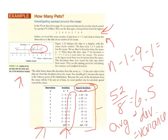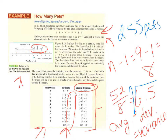The problem with the variance is that because we squared the deviations, our units are now squared pets — 6.5 squared pets away from the mean on average. To get back to pets instead of squared pets, we take the square root of the variance, which gives us 2.55 pets. That is our standard deviation.